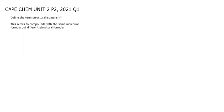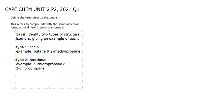For part two, it asks us to identify two types of structural isomers and we should give examples. For structural isomerism we have three types: chain, positional, and functional group.